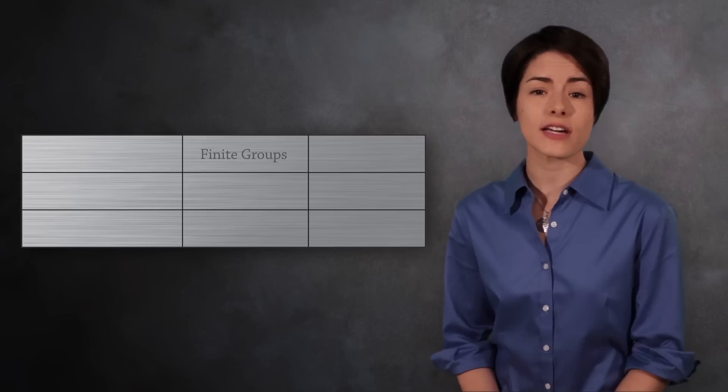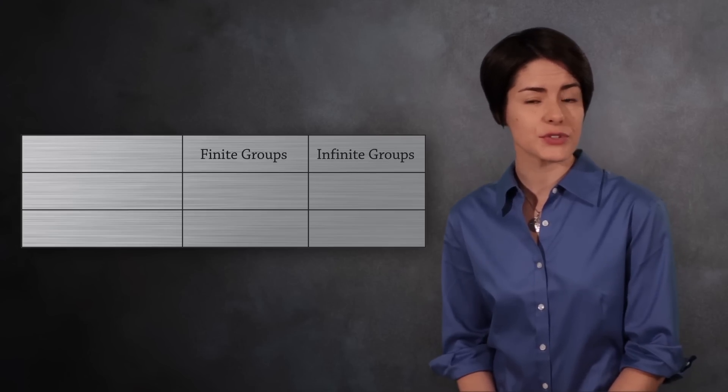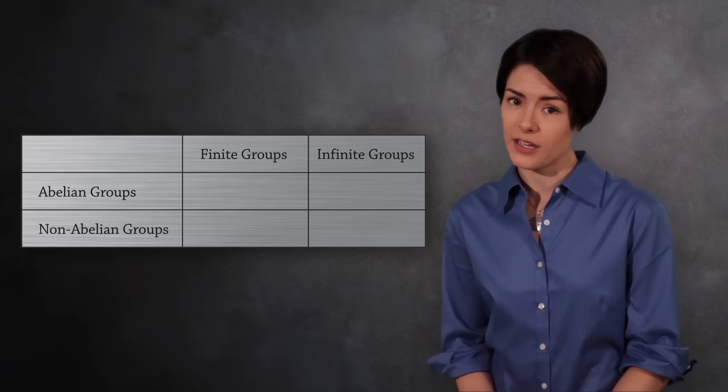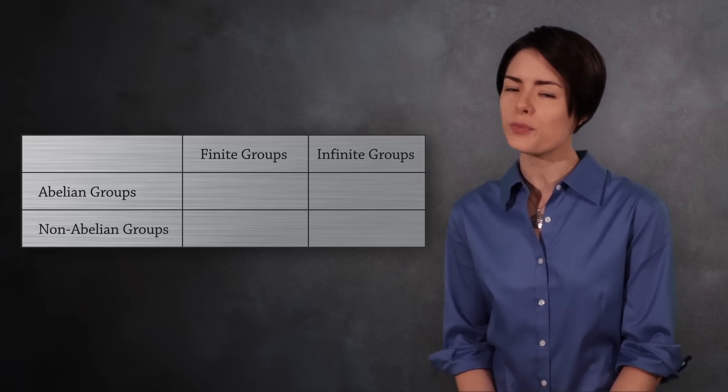There are so many types of groups. For instance, there are finite groups and infinite groups. You can have abelian groups and non-abelian groups. And there are many other ways you can group groups.